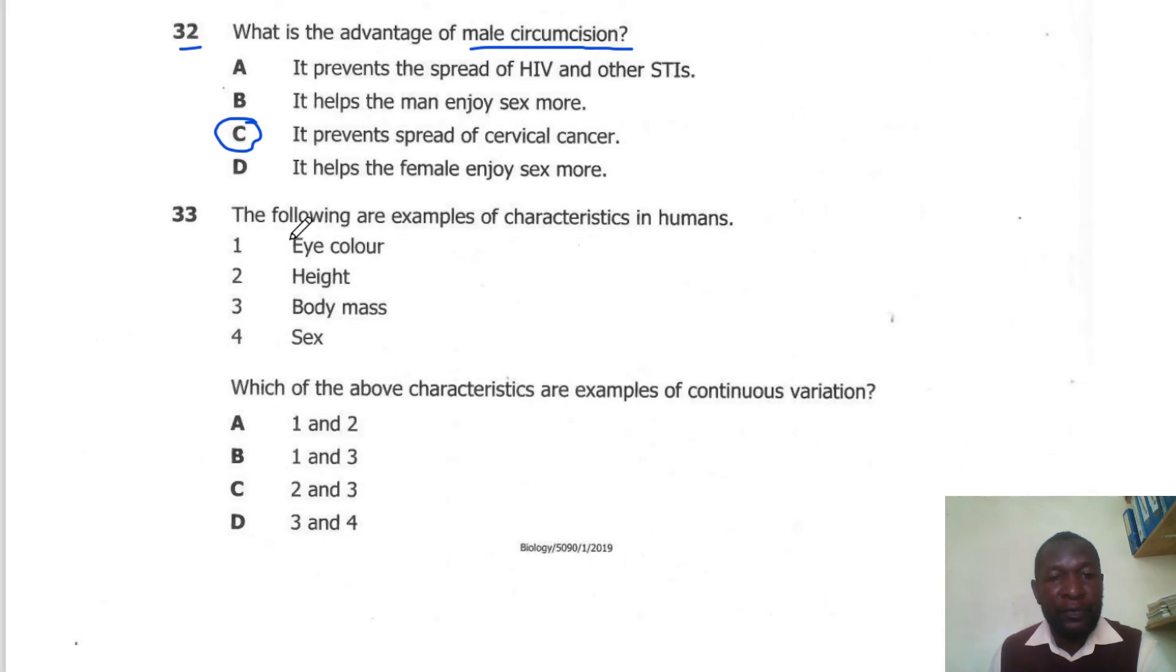Question 33. The following are examples of characteristics in humans. Which of the above characteristics are examples of continuous variation? Examples of continuous variation are height and mass. So the correct answer here is C.